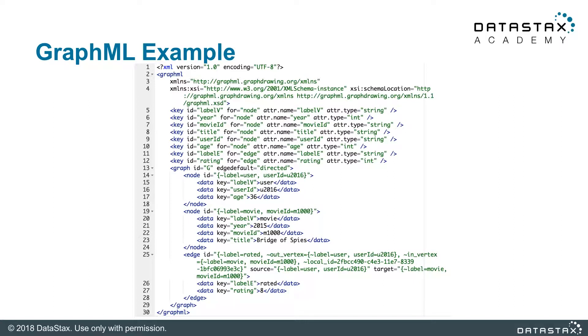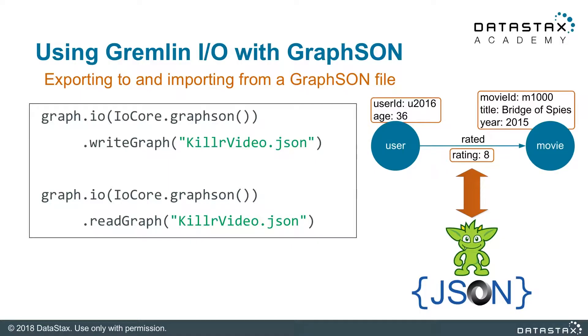As you can see, it's a human-readable format and knowledge of XML and XML schema helps here. Next, let's look at using Gremlin IO with the GraphSON format. The syntax is nearly identical, with the exception of specifying GraphSON in the GraphIO method and specifying a GraphSON-compliant file.